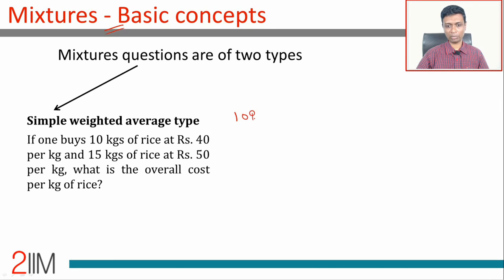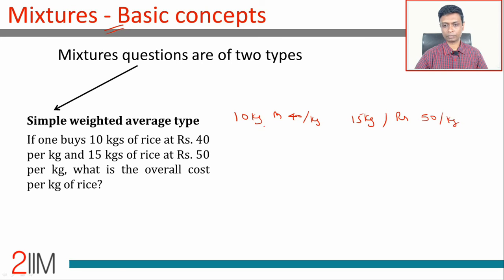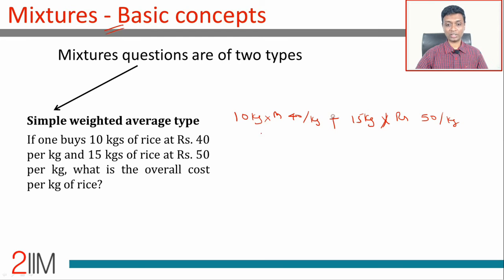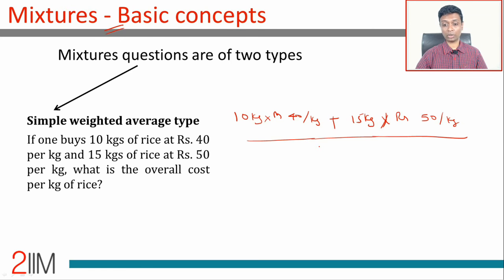You're buying 10 kilograms at rupees 40 per kilogram and 15 kilograms at rupees 50 per kilogram. What will be the overall cost per kilogram of rice? So 10 kg at ₹40 per kg and 15 kg at ₹50 per kg — the total cost is 10×40 plus 15×50. This total cost is for a total purchase of 25 kilograms.